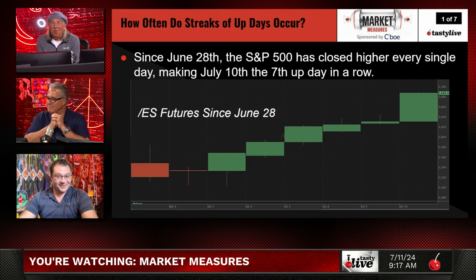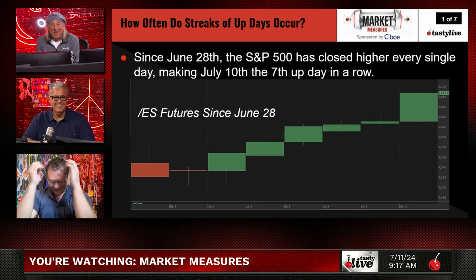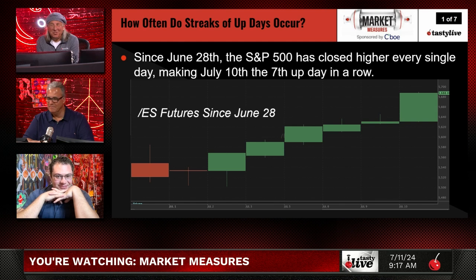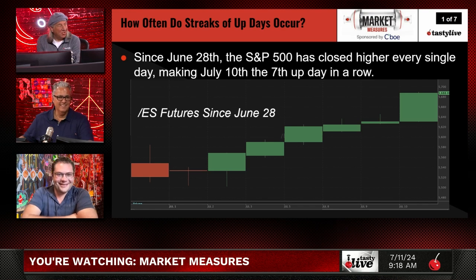We're going to call this: how often do streaks of up days occur? Do you know how many up days we had in a row the last couple of days? Too many. There is the screen right there. You can see one, two, three, four, five, six — and actually it counts more than that. It was 10 to be honest, but whatever. I think it's seven in the S&P futures. We were up this morning, but then they obviously turned around. So since June 28th, the S&P 500 has closed higher every single day, making July 10th the seventh up day in a row in the S&P futures. There's the chart.